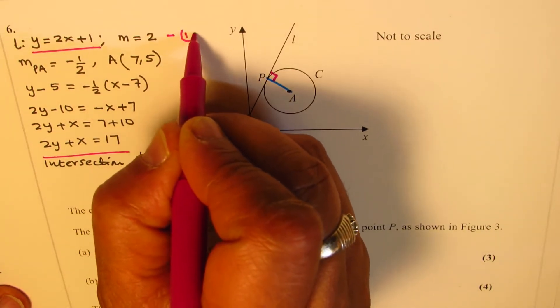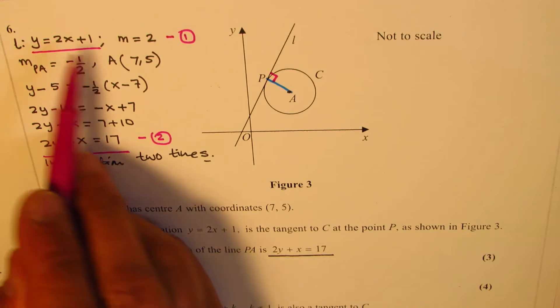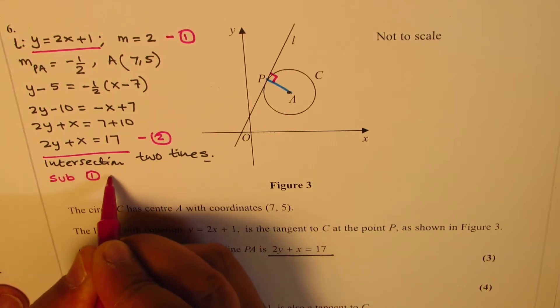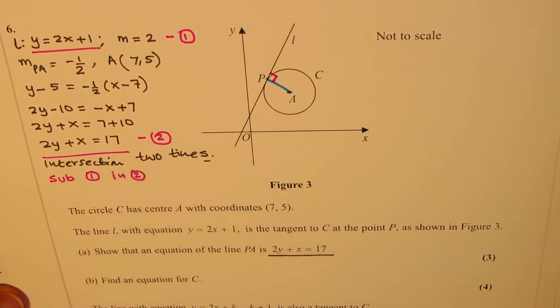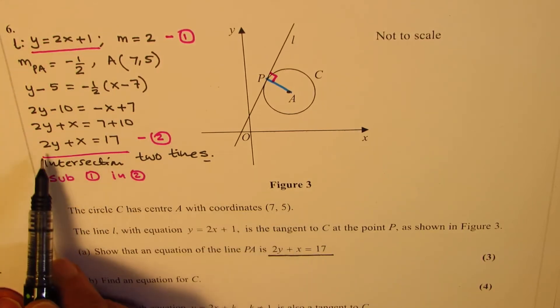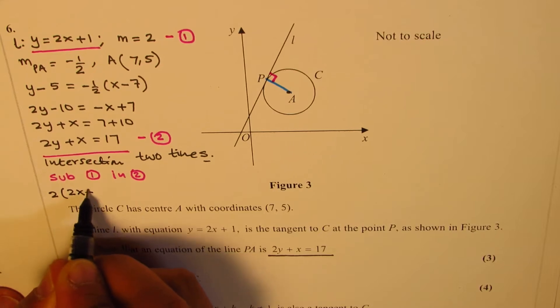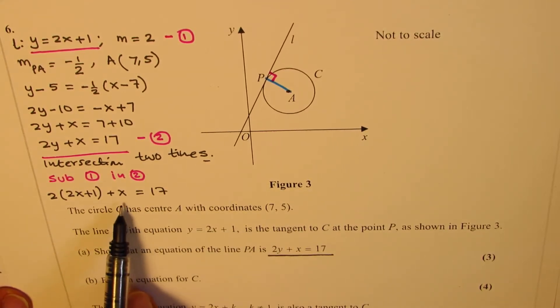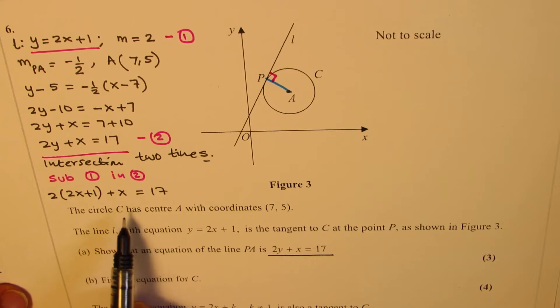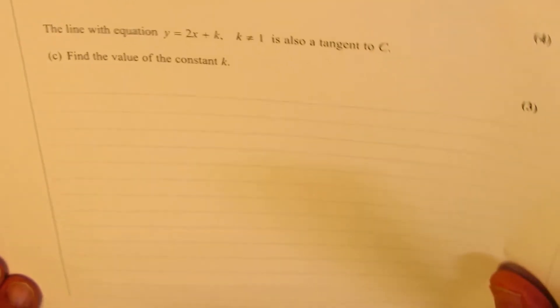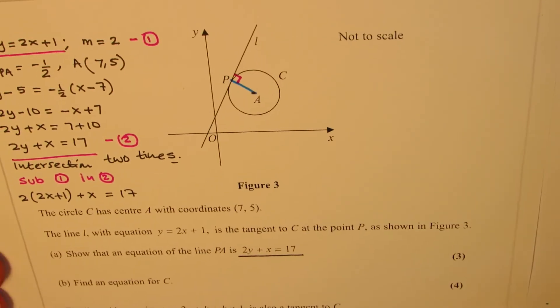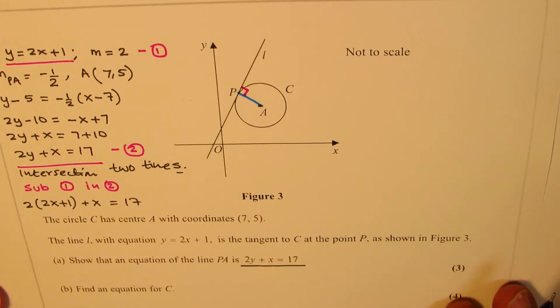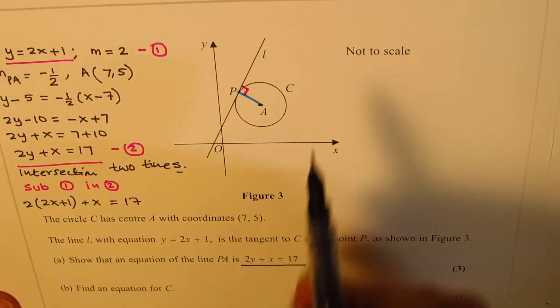Let's call these equation 1 and equation 2. We'll substitute the value of y from equation 1 into equation 2. We get 2(2x + 1) + x = 17. Normally you're supposed to answer in this space. Since I want to keep focus on the diagram, we are working out on this side. My solutions are basically hints for you to solve.